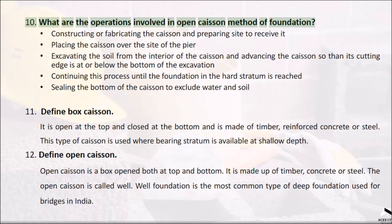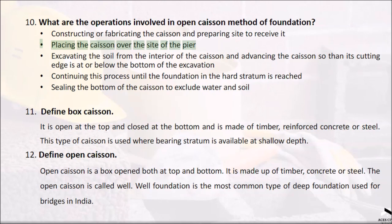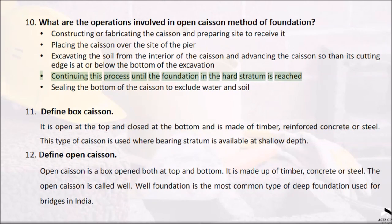Question 10: What are the operations involved in the open caisson method of foundation? Constructing or fabricating the caisson and preparing the site to receive it; placing the caisson over the site of the pier; excavating the soil from the interior of the caisson and advancing the caisson so that its cutting edge is at or below the bottom of the excavation; continuing this process until the foundation in the hard stratum is reached; sealing the bottom of the caisson to exclude water and soil.